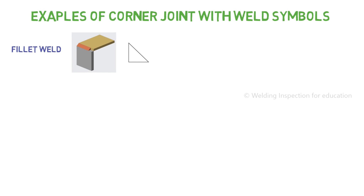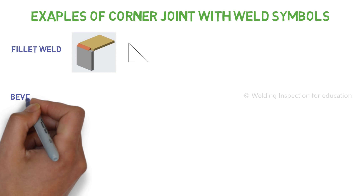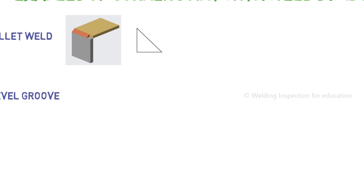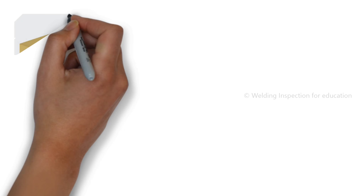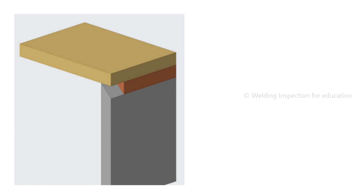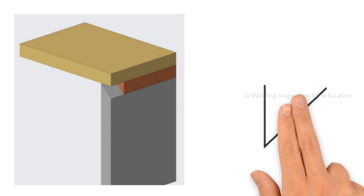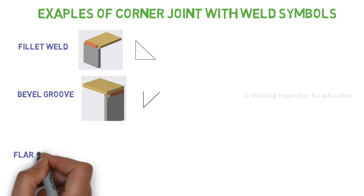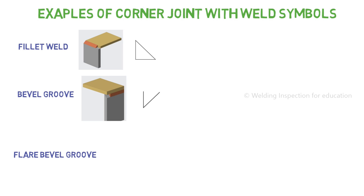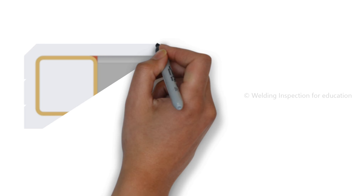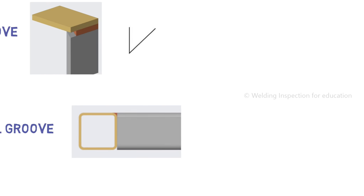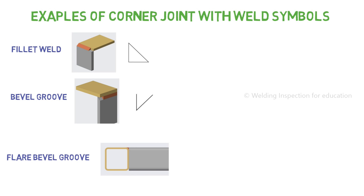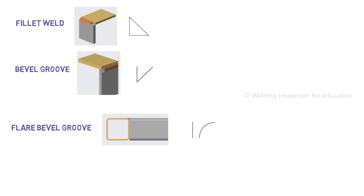Second, bevel groove corner joint: same as fillet weld but in this case one surface is prepared with some angle. Third, flare bevel groove corner joint: like the fillet weld and bevel groove, same connection — only one surface has a radius and the other one is flat.